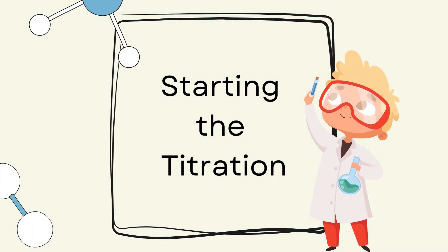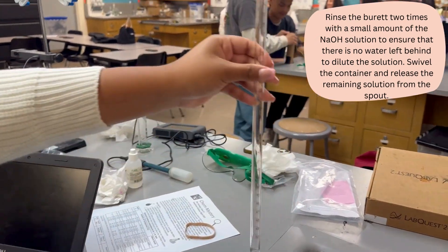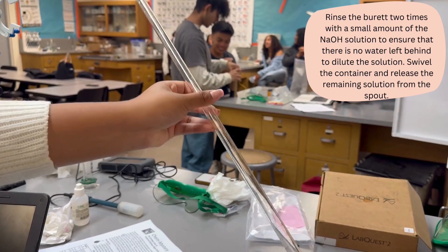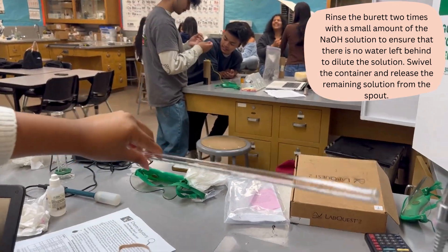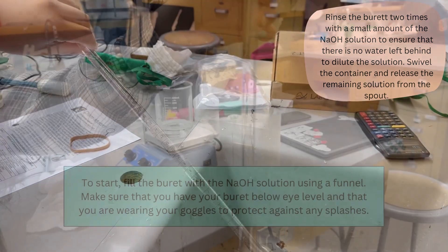Starting the titration. Rinse the burette two times with NaOH solution to ensure that there is no water left behind that can dilute the solution. Swivel the container and release the remaining solution from the spout.